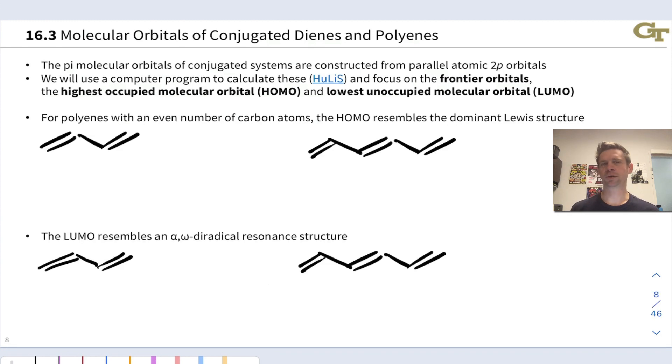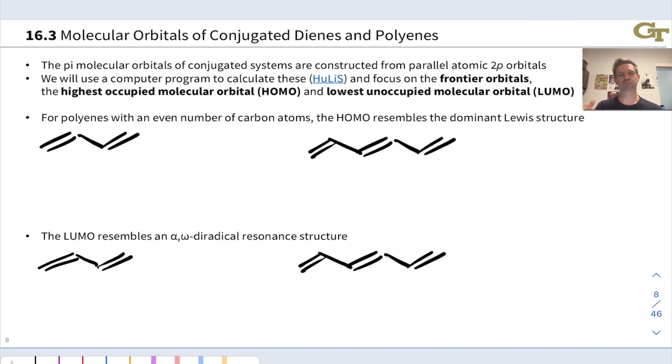Because we're going to focus so much on the frontier molecular orbitals, the HOMO and LUMO, I want to leave you with a little trick for drawing the HOMO and LUMO of a conjugated polyene from scratch. Now this only works for conjugated polyenes. That means hydrocarbons only, no heteroatoms in the conjugated system, and we need an even number of carbon atoms so that the Lewis structure has a pattern of alternating double and single bonds.